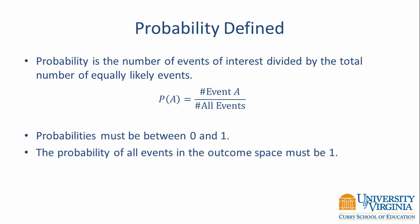Probability is defined as the number of events of interest divided by the total number of equally likely events. Probabilities must be between 0 and 1, and the probability of all events in the outcome space must sum to 1.